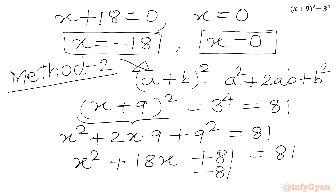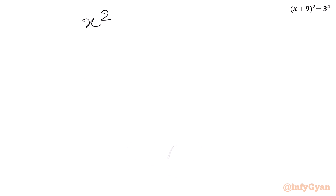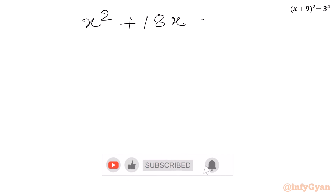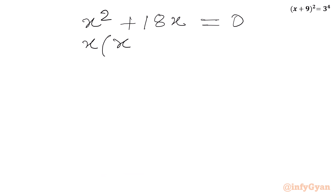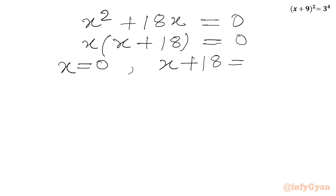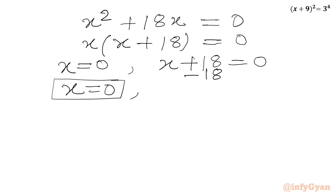Now subtract 81 from both sides. The +81 and -81 cancel, giving us x² + 18x = 0. We can take x as common, so x(x + 18) = 0. Therefore x = 0 or x + 18 = 0. So our two solutions are x = 0 and x = -18.